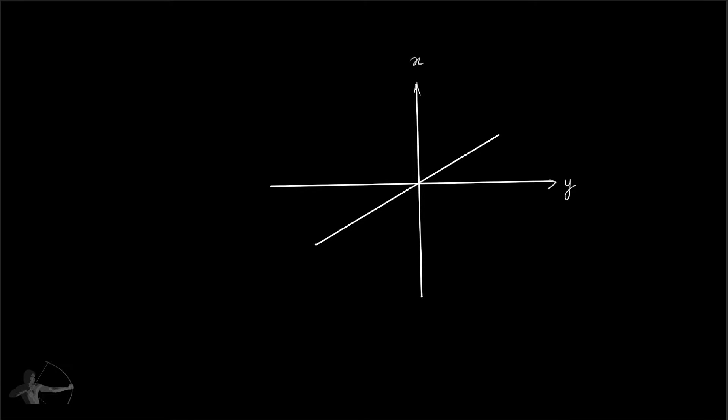We will understand how we are going to manipulate the vertex positions of the mesh. Consider that these are the coordinates of our world and we have a mesh here. We will be applying our flag shader on this mesh.